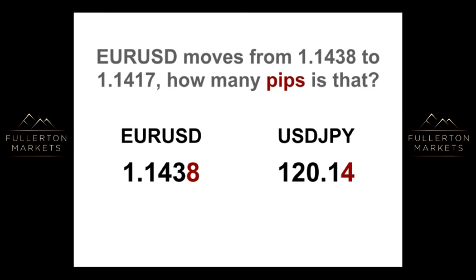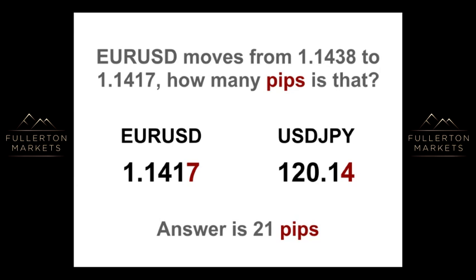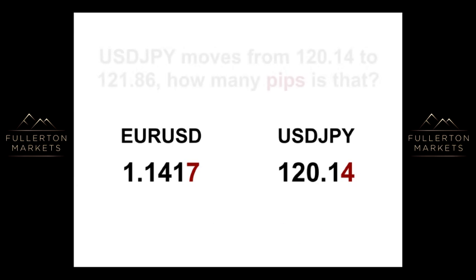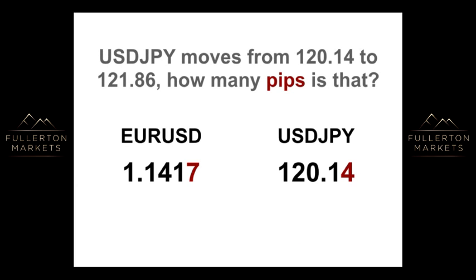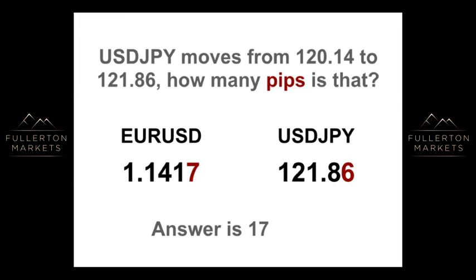If the EURUSD moves from 1.1438 to 1.1417, how many PIPs is that? The answer is 21 PIPs. If the USDJPY moves from 120.14 to 121.86, how many PIPs is that? The answer is 172 PIPs.